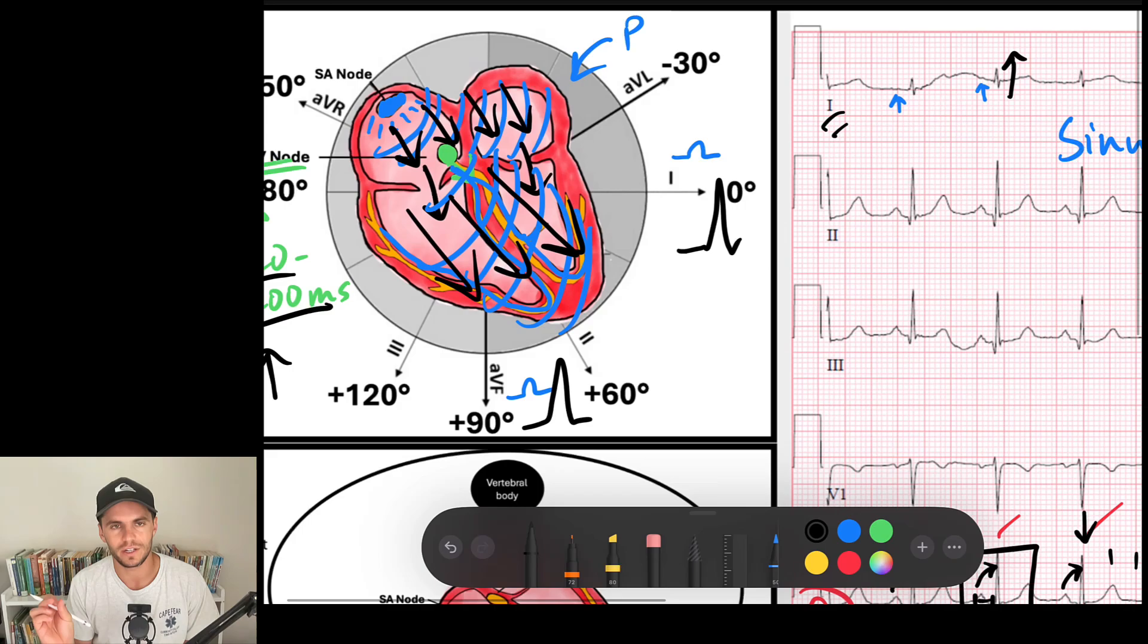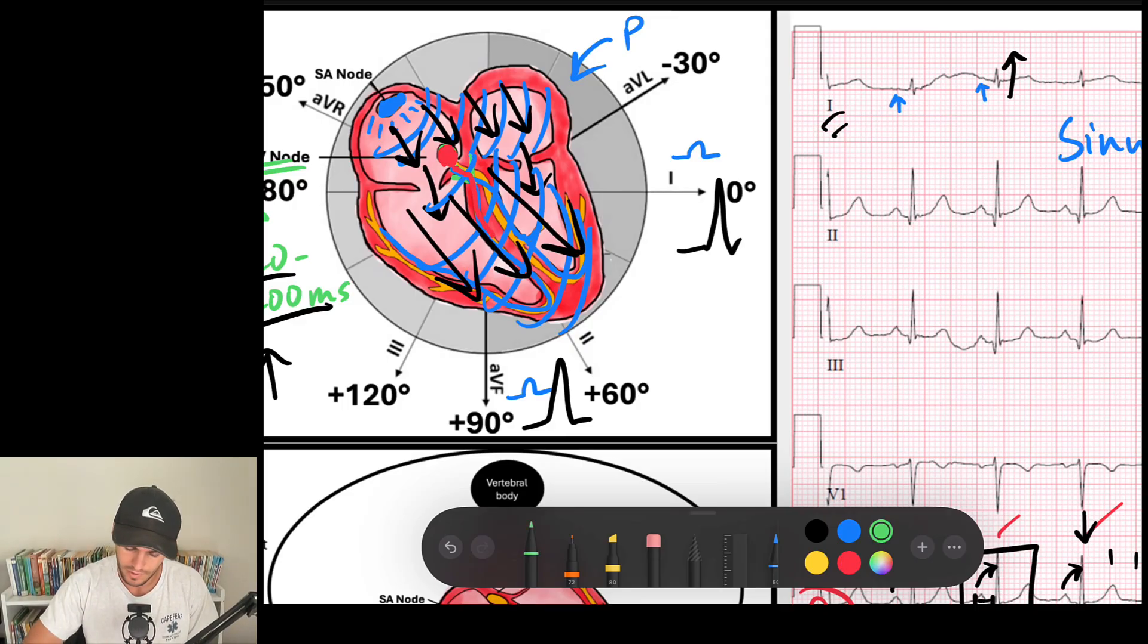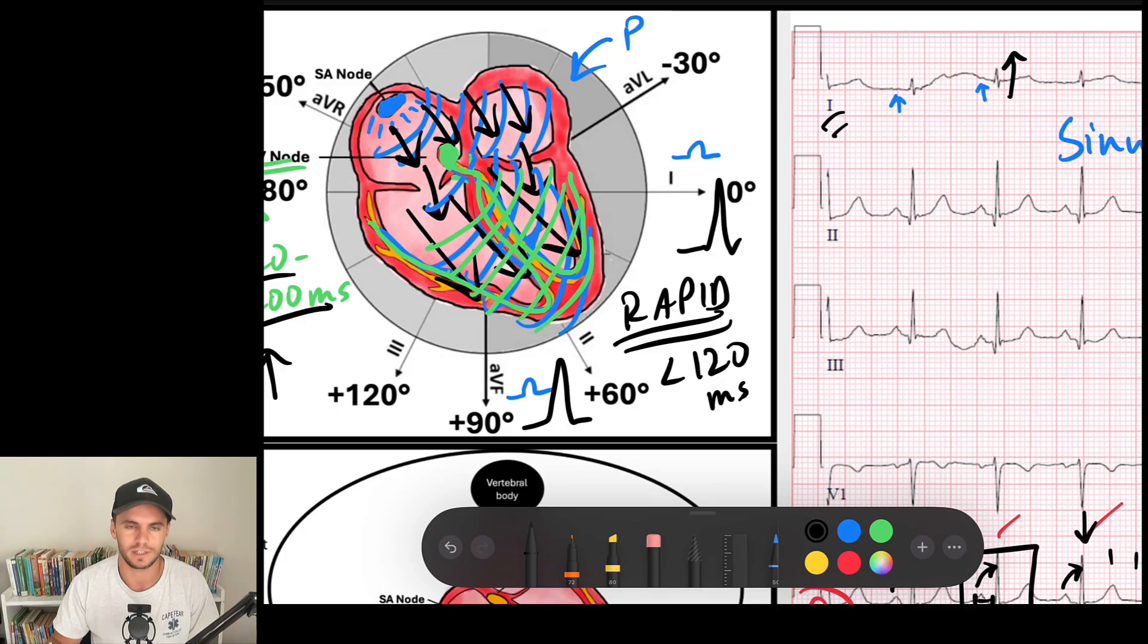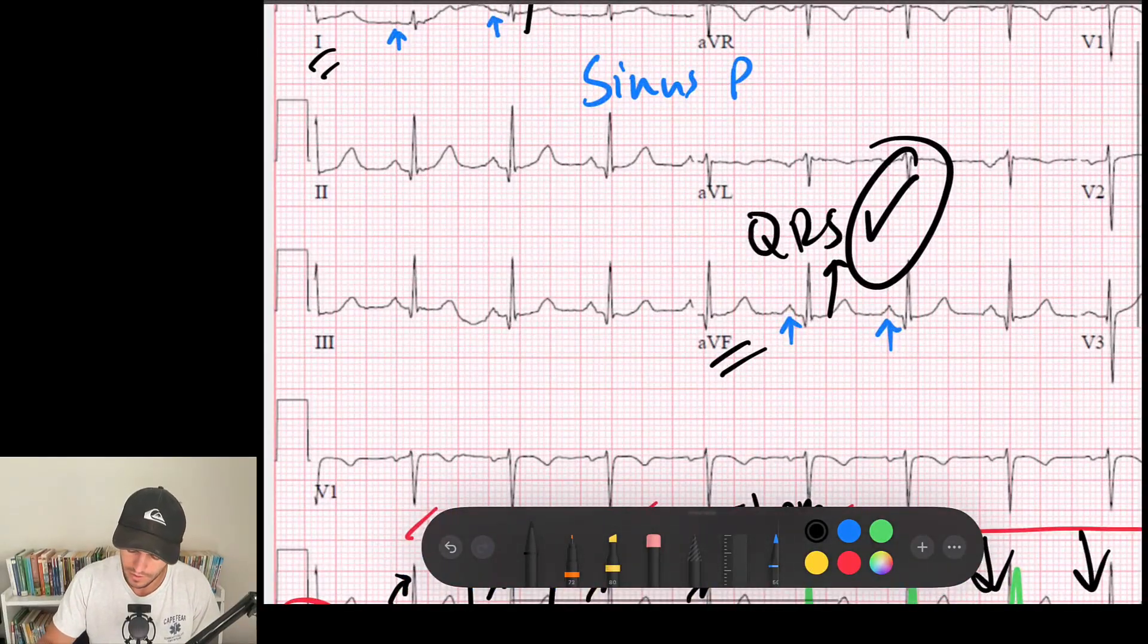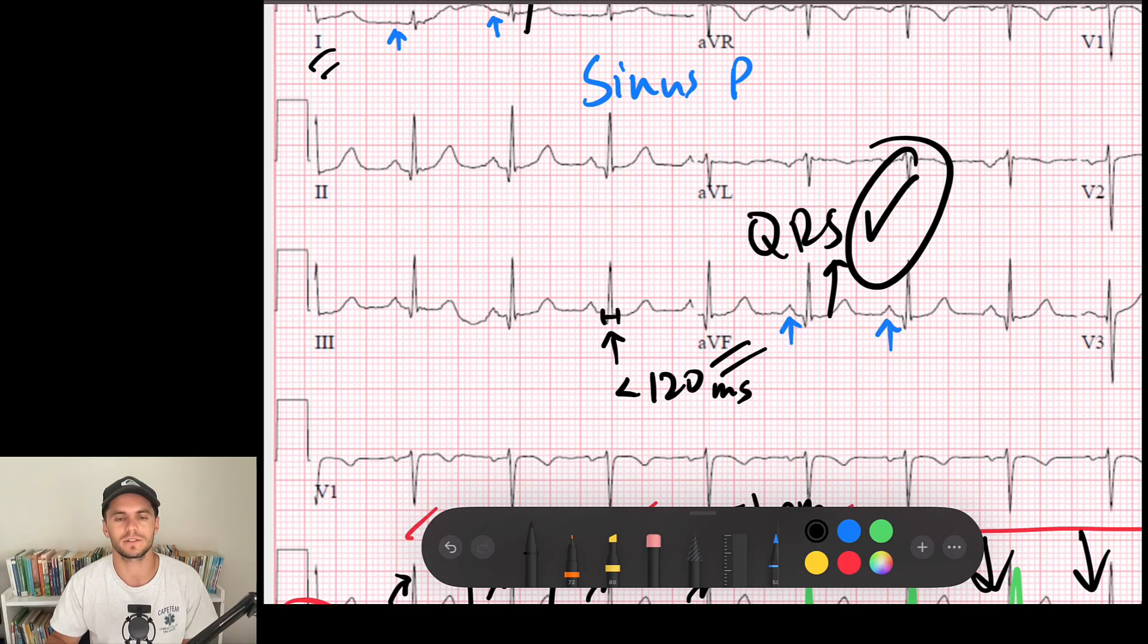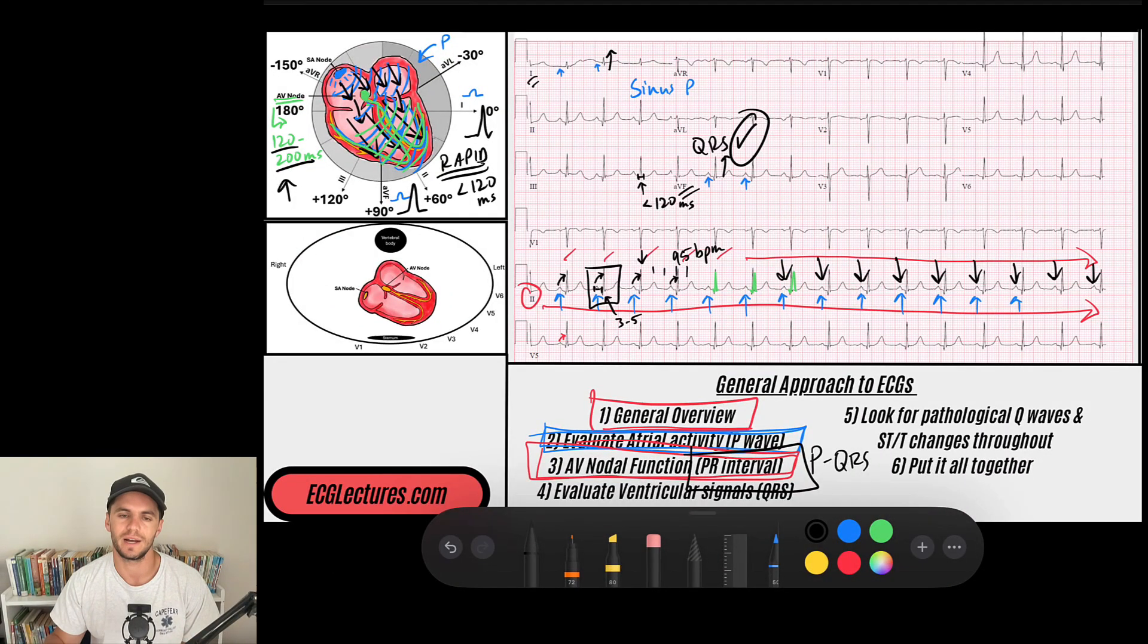The next thing I'm going to evaluate for is the duration. Is the QRS wide or narrow? And I do that because remember when the AV node passes signal down, it does so via these rapidly conducting His-Purkinje system. Let's do it in green. So my AV node sends it down via the bundle of His and these Purkinje fibers that are the bundle branches. And remember, those are specialty fibers that conduct signal very rapidly. And we know that rapid signal means the QRS should be less than 120 milliseconds or less than three small boxes. So I look at the duration of my QRS, and I look here, and I see that my QRS is less than 120 milliseconds or less than three small boxes. And that tells me that signal is traveling through those His-Purkinje fibers the way they should.